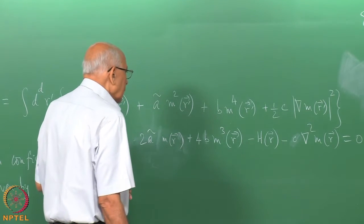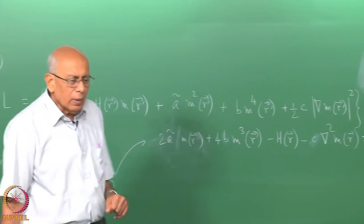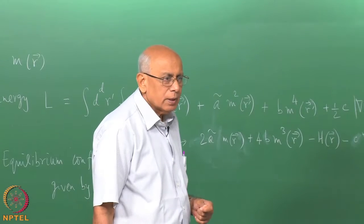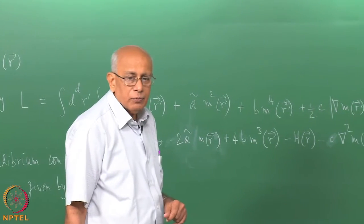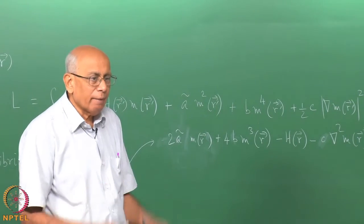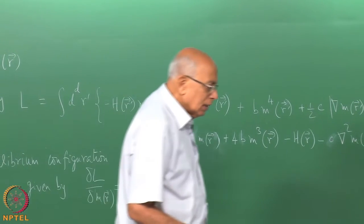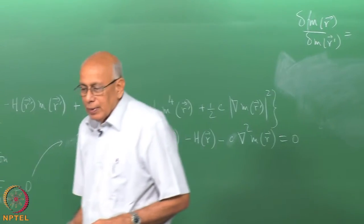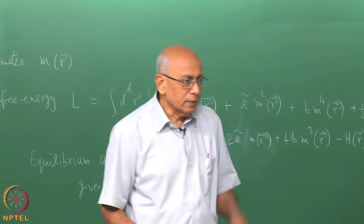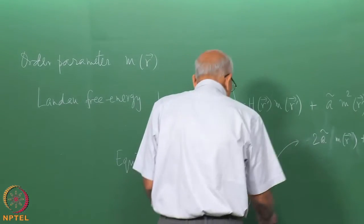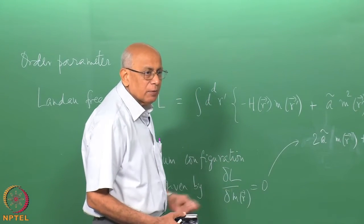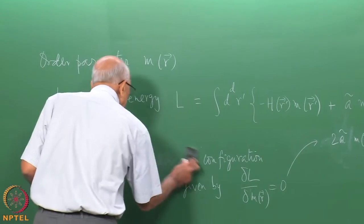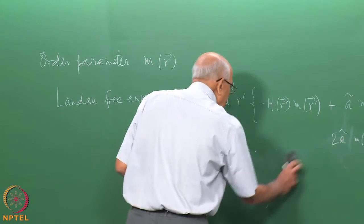Now suppose we solve this in principle and ask: if there is a local fluctuation due to thermal noise from this equilibrium configuration, how does the system come back to it? This is in the spirit of linear response theory, and we would like to find out how the relaxation proceeds. There is no rigorous way of doing this except in a specific model, but one would guess exactly as in the naive Langevin equation case.